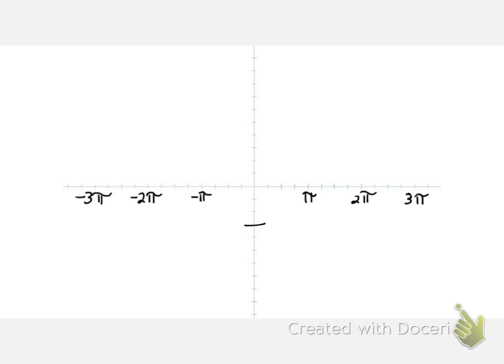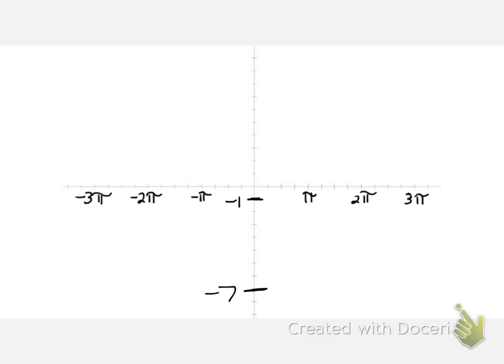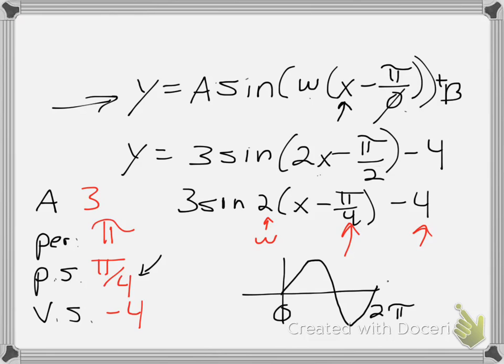So my new values are going to be from negative 1 to negative 7. Now we have to consider our phase shift, which we said was π/4. So again, normally we start at 0, as you can see. And since it's a, let me go back, remember since it's subtraction here...